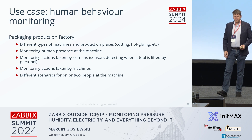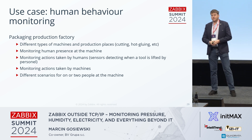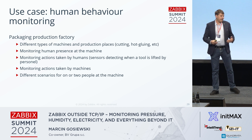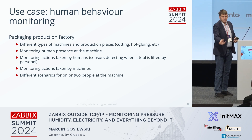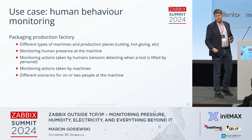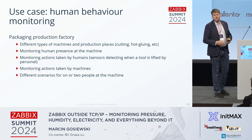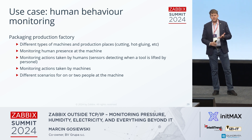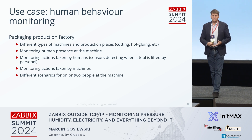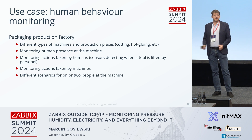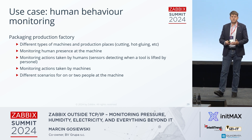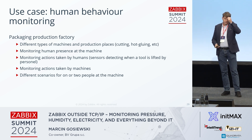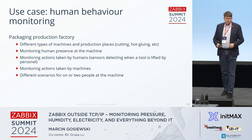Human behavior monitoring — a packaging production factory. Employees come to the machine, we detect their presence. They pick tools, we detect which tools are picked. Being clever about it, you can know everything: how efficient they are, how fast they are working. You can write alerts for when, for instance, one of the tools is not used for some time, or if they use it in the wrong direction, or wrong order.